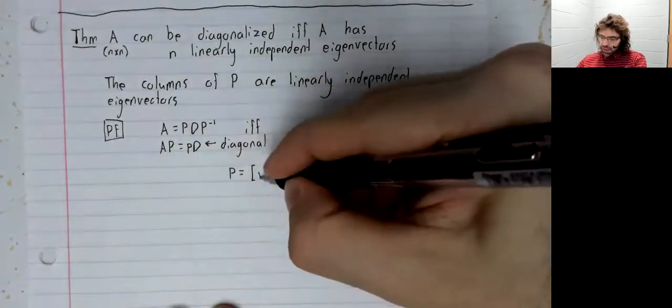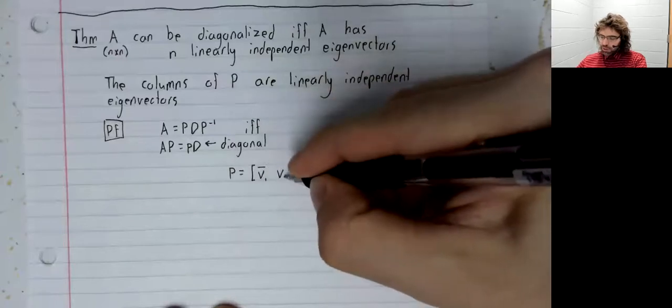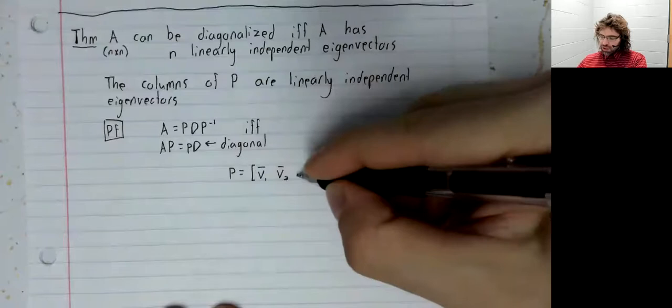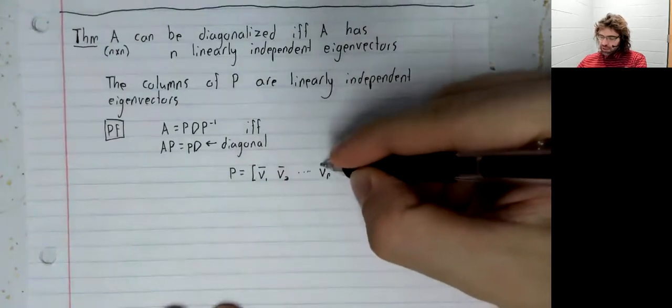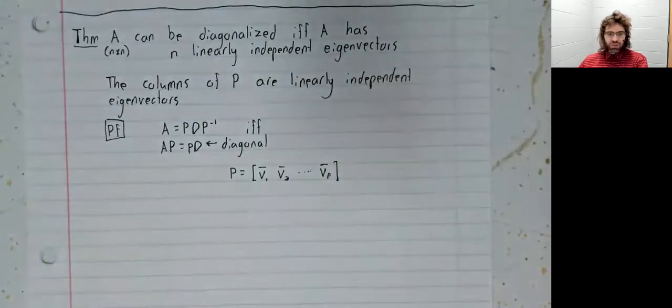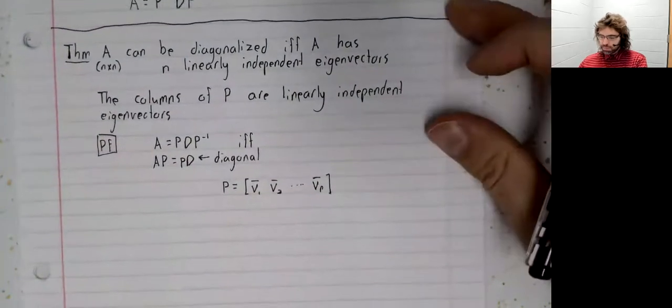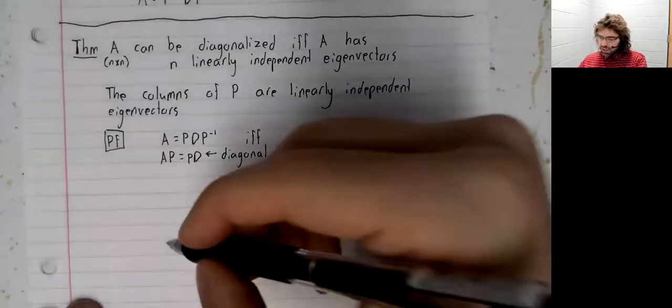Let's look at this matrix P. And as we so often do, let's think of this matrix as a bunch of column vectors sitting next to each other. Then A times P.